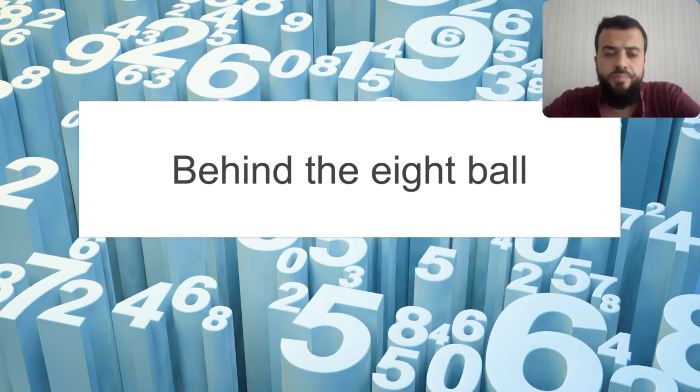Number eight. Behind the eight ball. This expression comes from billiards or pool. The eight ball is usually the black ball. Usually, when you hit the balls, you must hit them in the correct order. And you can't touch the eight ball. If the ball that you want to hit, let's say it's number two, or number three, or number seven, it's behind the eight ball. It's very hard for you to hit this ball without hitting the eight ball. And it means that you are in a very difficult situation, or you are in trouble, or you are out of luck.